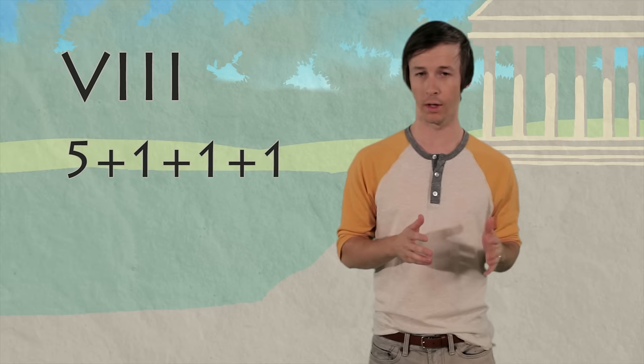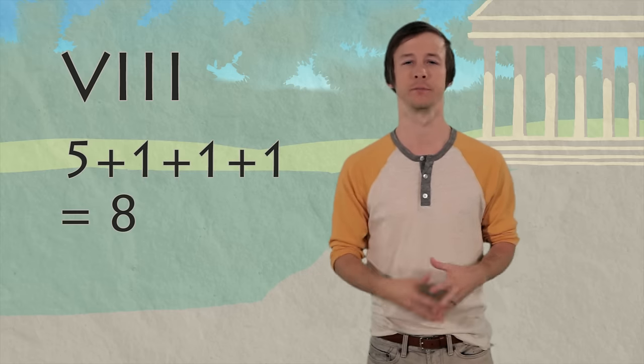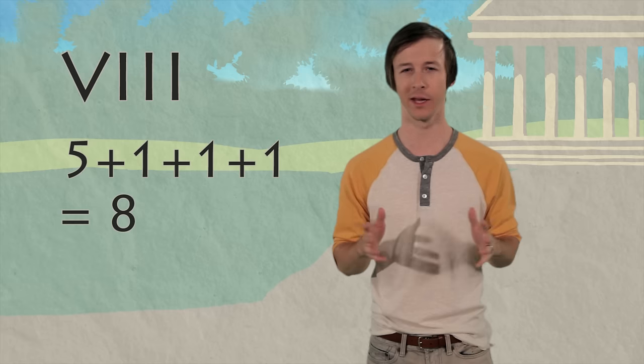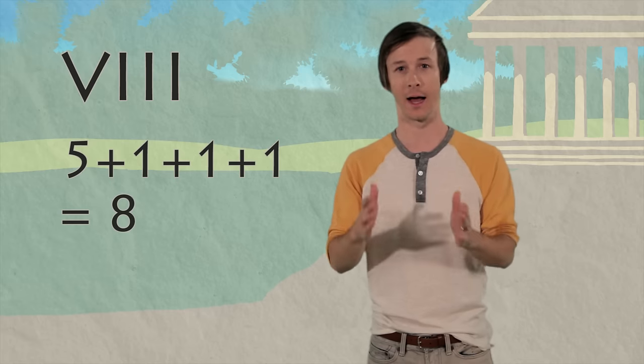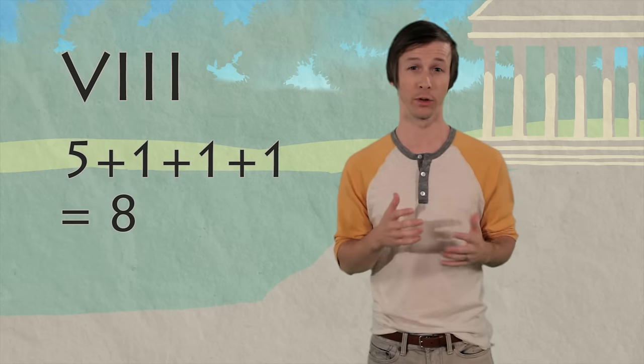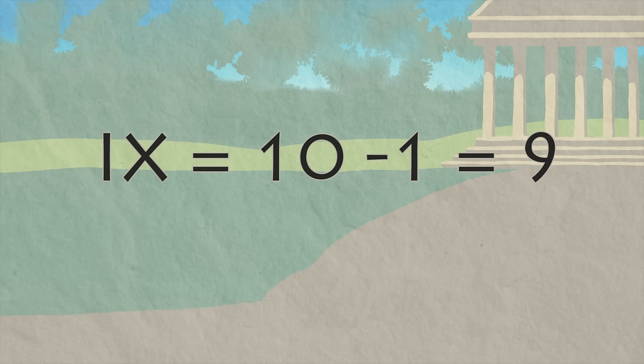Do you know what VIII means? Five, plus one, plus one, plus one equals eight. But do you know how to write nine? You can't write VIIII, because that has more than three of something in a row. Instead, you write IX. That means take one away from ten to get nine.